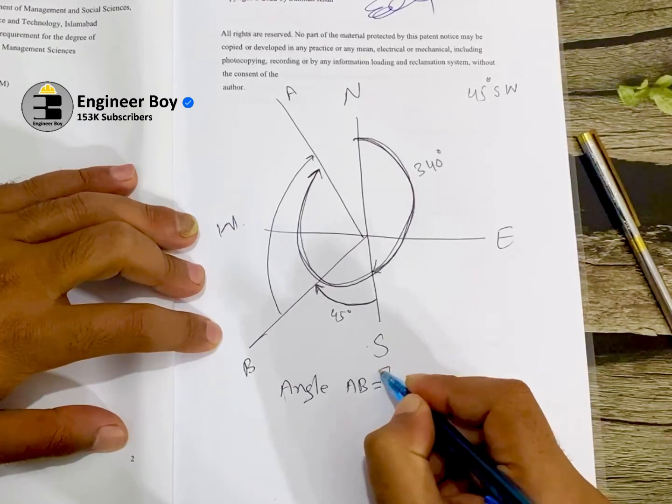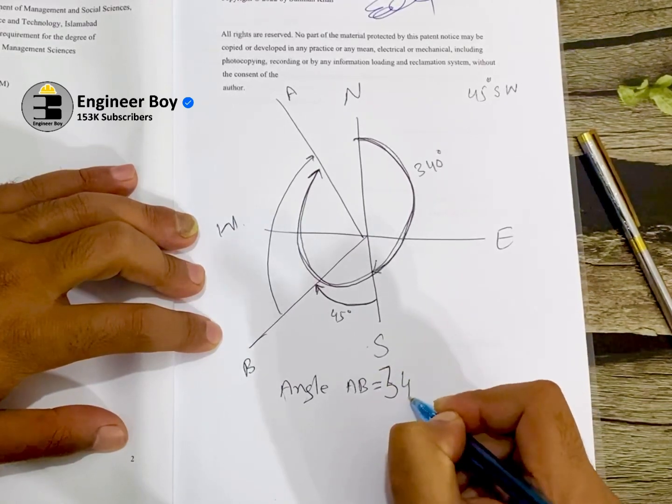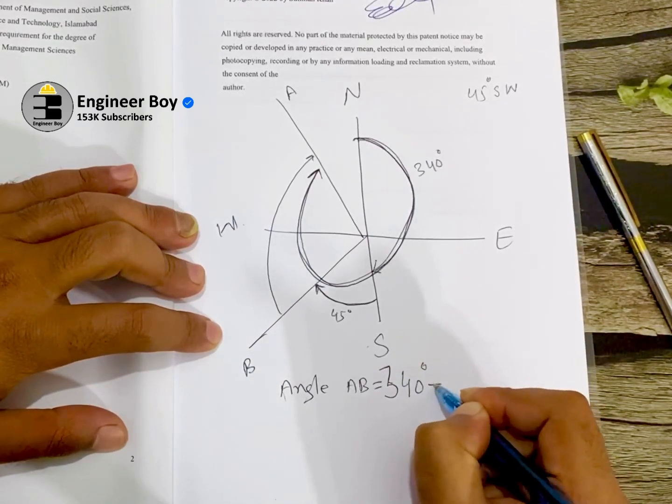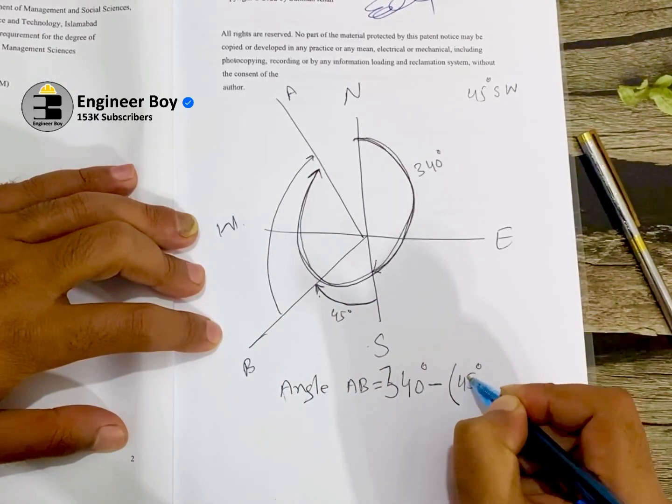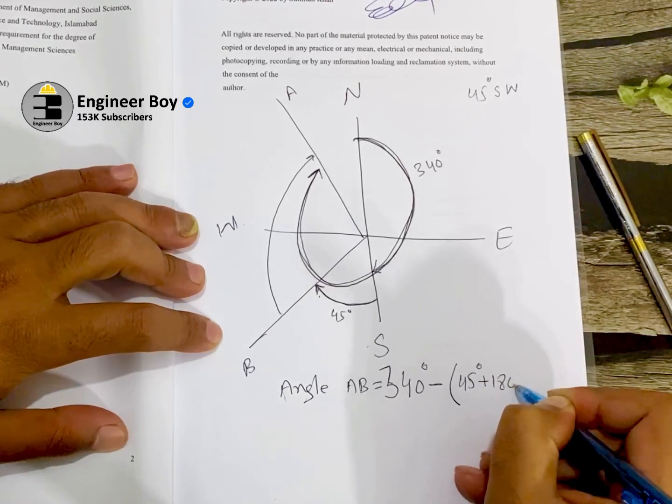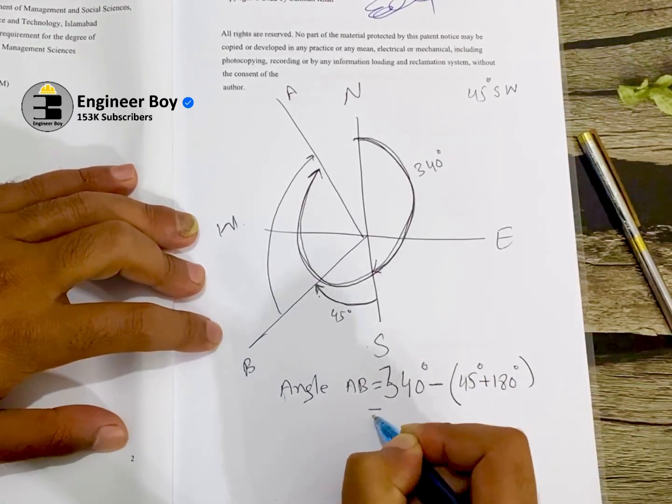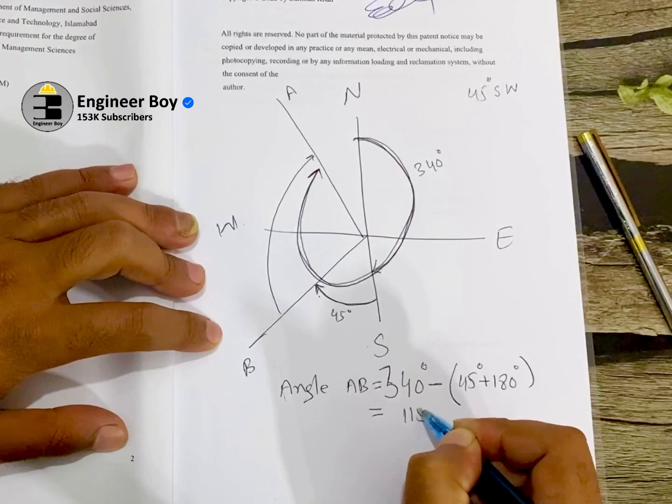minus the summation of this one, 45 degrees, and 180 degrees, and that is going to be actually 115 degrees.